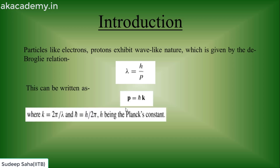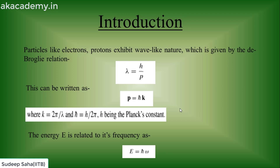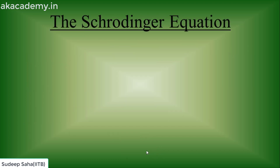The momentum p can be written as h-bar times k, where k is 2π over lambda, and h-bar is h divided by 2π — it is the reduced Planck's constant. Similarly, energy can be written as h-bar times omega, where omega is the angular frequency, which equals 2π times nu.